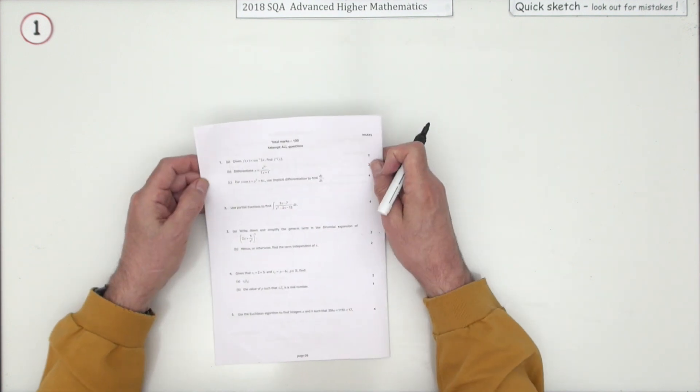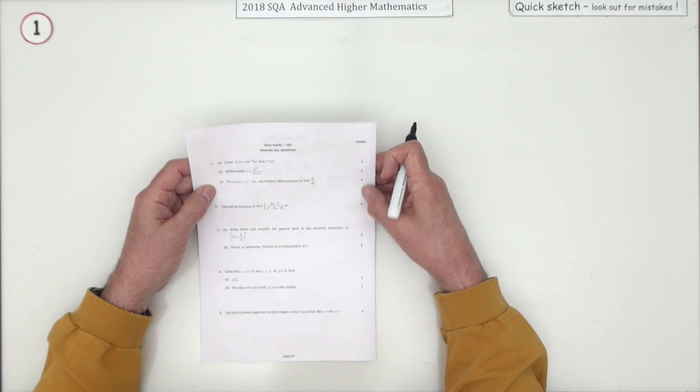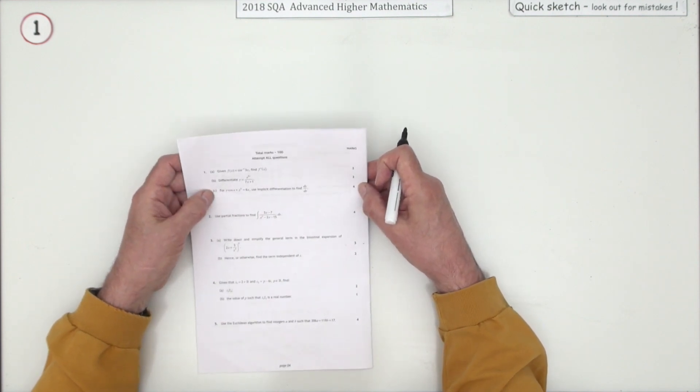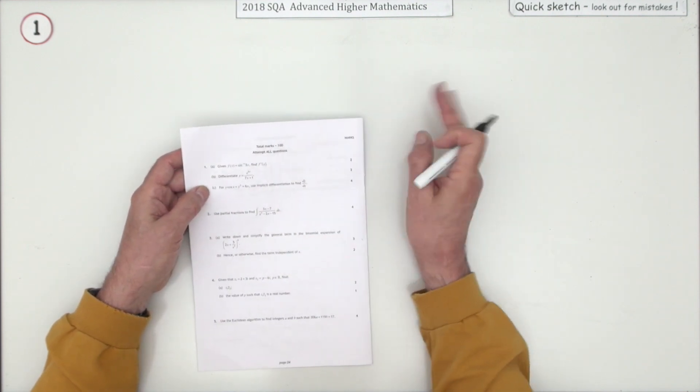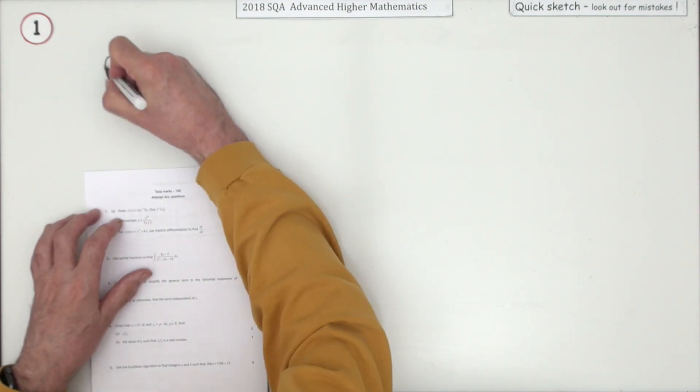Number 1 then from the 2018 Advanced Higher Maths. We've got a differentiation question, eight marks for this first question, but there's three parts, all different. They've been off to the supermarket and got themselves a mixed bag of derivatives here.